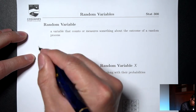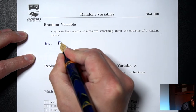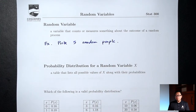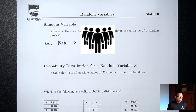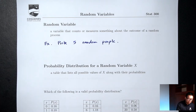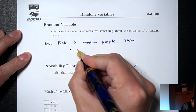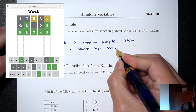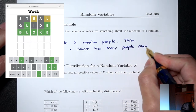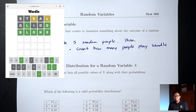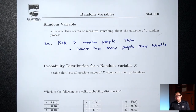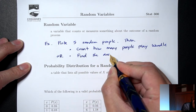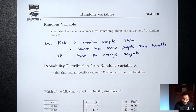Say I pick five random people. In and of itself, I don't end up with numbers — I'll just end up with five different people. But I can force it to be a number by counting or measuring something. I could count how many people play Wordle, and then I end up with a number. Or I can measure people's heights and find the average height, and I'll also end up with a number.